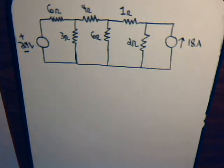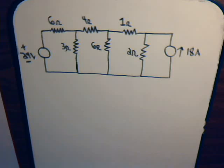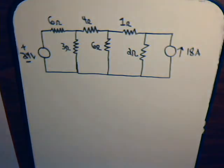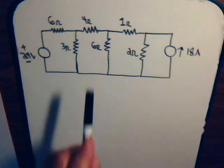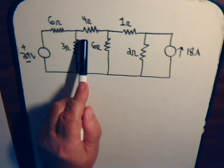In the last video we had considered this circuit and we wanted to solve for the current that was flowing through the 4 ohm resistor. We solved it by using superposition, and determined that the current going through the 4 ohm resistor was 2 amps flowing in this direction.